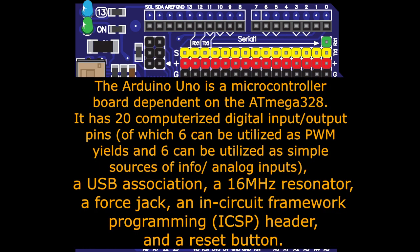Question number two: How does Arduino Uno work? The Arduino Uno is a microcontroller board dependent on the ATmega328. It has 20 digital input/output pins, of which six can be utilized as PWM outputs.